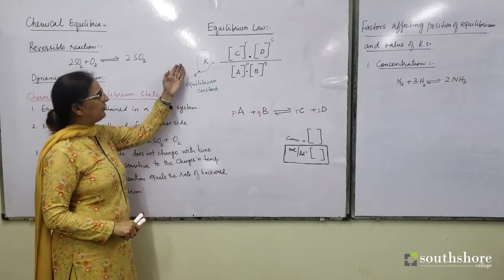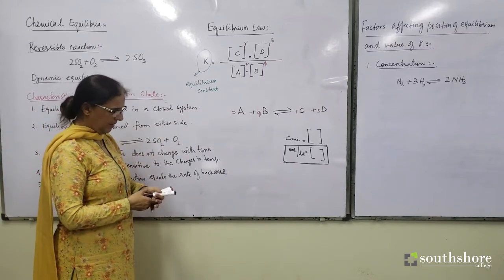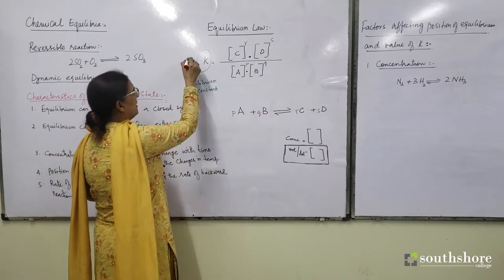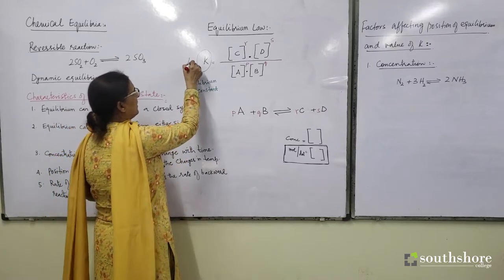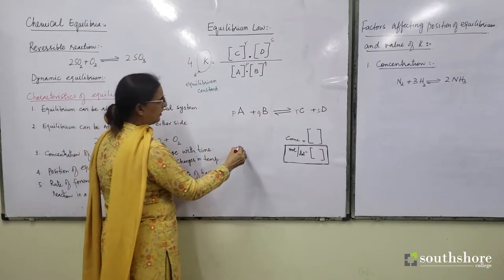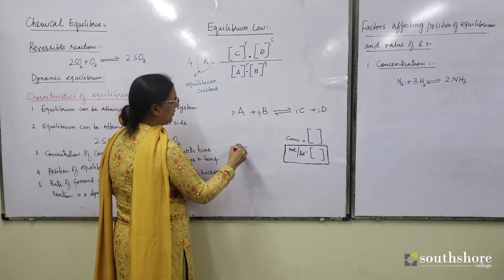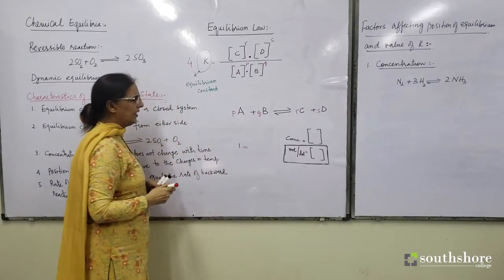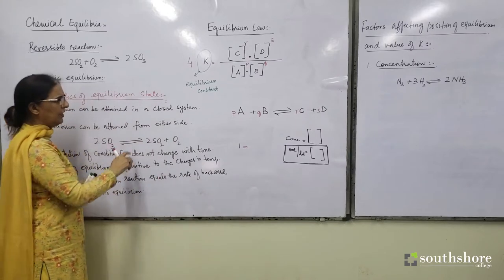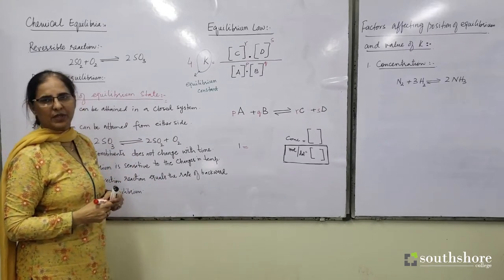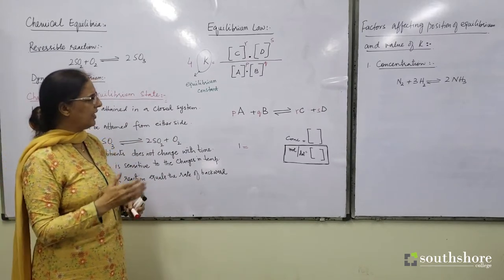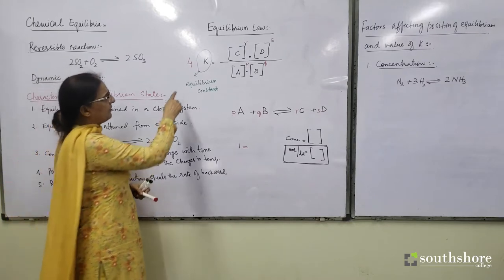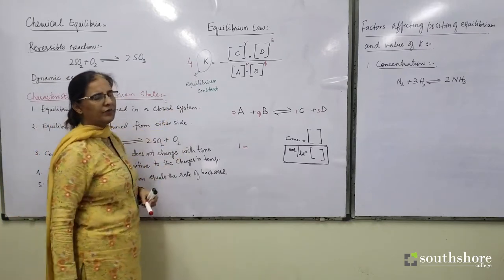When we look at the value of K — say for example the value of K is 4, meaning it is greater than 1. Whenever we talk about the ratio and the value of that ratio is equal to 1, that means the rate of the forward direction reaction is equal to the rate of the backward direction reaction. The extent of forward and backward reactions are equal.